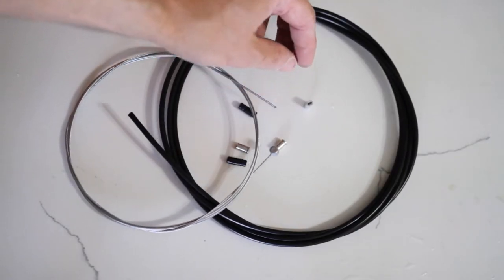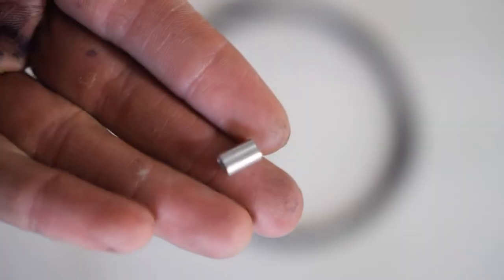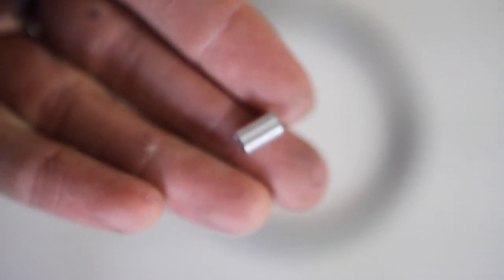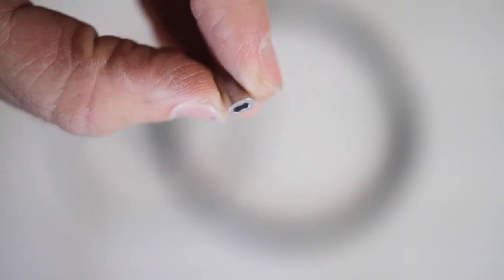Next I swung by my local bicycle repair shop and grabbed some brake cable and I had these ferrules laying around in my scrap bin that I could use for the stops. I was really excited to try this because I had never done this before, so I just kind of went for it.